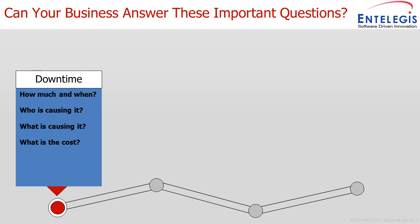First, we need to ask ourselves some questions. If you can answer all of these and your business is taking care of them, then you either already have an MES system or you are a manufacturing facility that doesn't really require one. The first questions are around downtime: how much and when? If your line goes down, do you have a way of identifying why, and historically looking at when it happened to do analysis and Kaizen — making the process better? Can you determine who or what is causing it — perhaps equipment, material, or product?